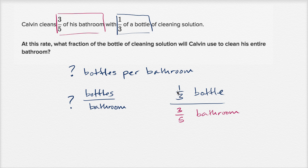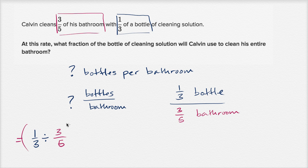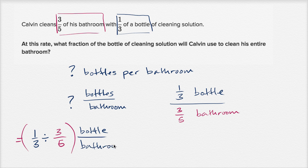So now we just have to take one-third and divide it by three-fifths. This is going to be equal to one-third divided by three-fifths, and the units are going to be bottles per bathroom — or since we know it's going to be a fraction, we can just say bottle per bathroom.